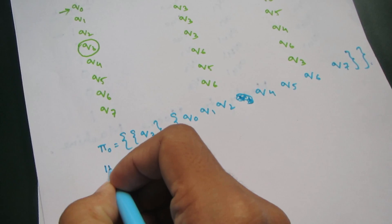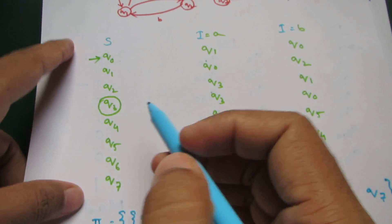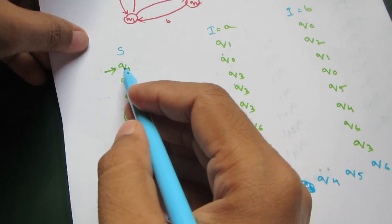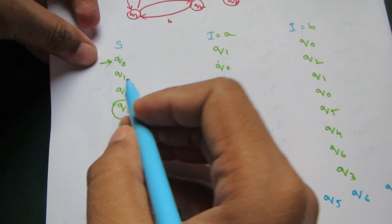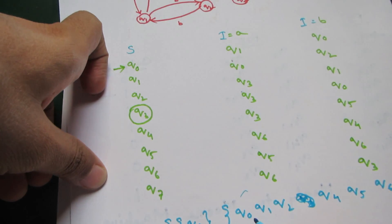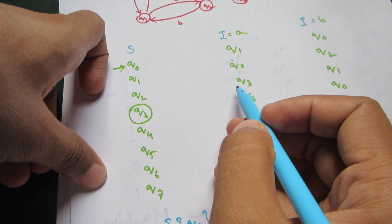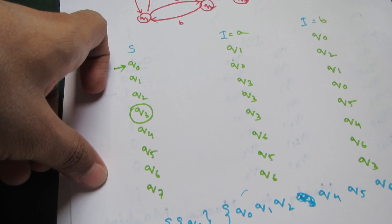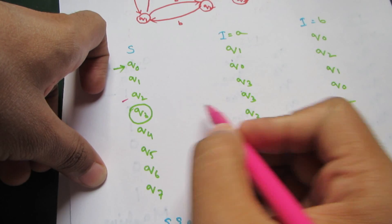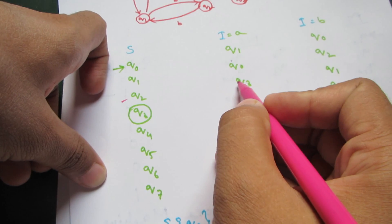Now for π1, we divide further. For Q0, on A it goes to Q1 which is within the group, and on B it goes to Q0, also within. For Q2, on A it goes to Q3, which is outside the group — so Q2 is a candidate for separation. Q3 is already outside.